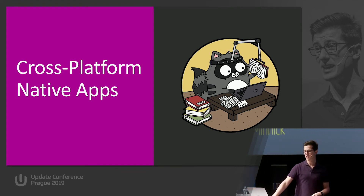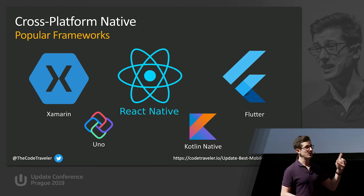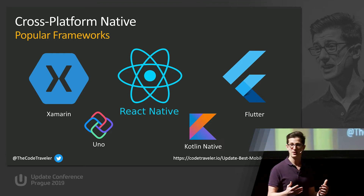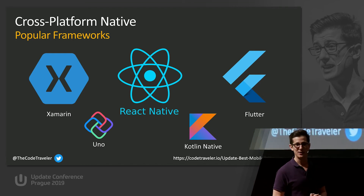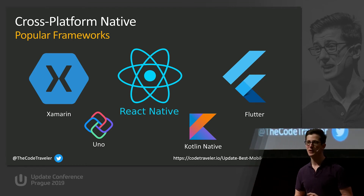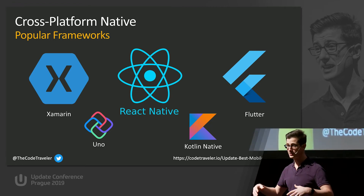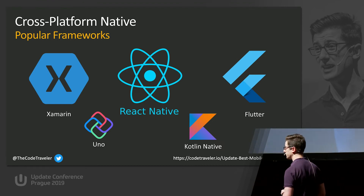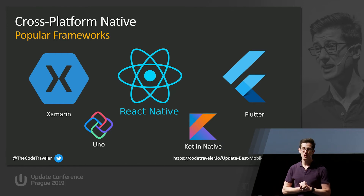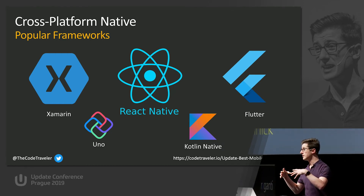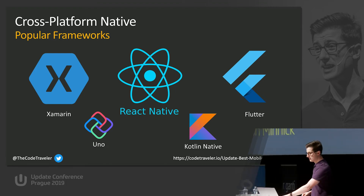Diving back into native apps — these are cross-platform native apps. When we say native, it means these frameworks use the native APIs. The most popular ones are: Xamarin, which lets you make iOS and Android apps in C#; React Native, the same thing but for JavaScript developers; and Flutter, which is pretty new and uses Dart. There are also some rising stars like Uno and Kotlin Native. Uno lets you make mobile apps using UWP XAML, and Kotlin Native uses Kotlin. But for today, let's focus on the top three.